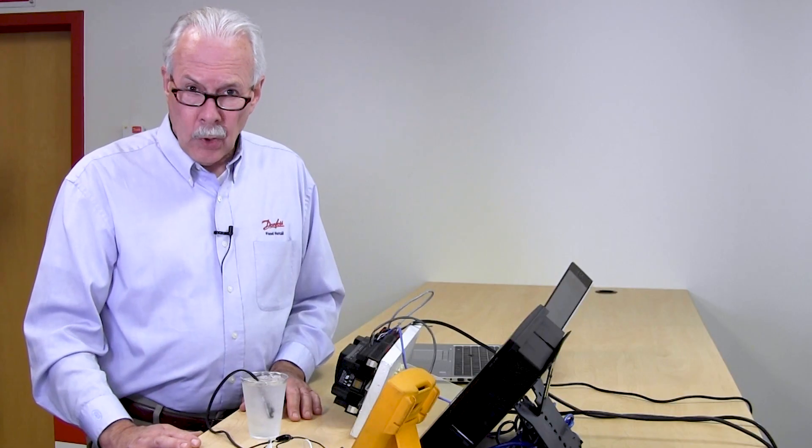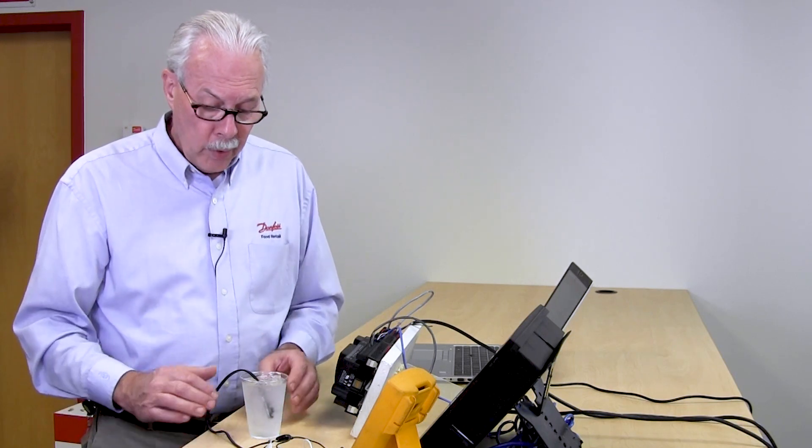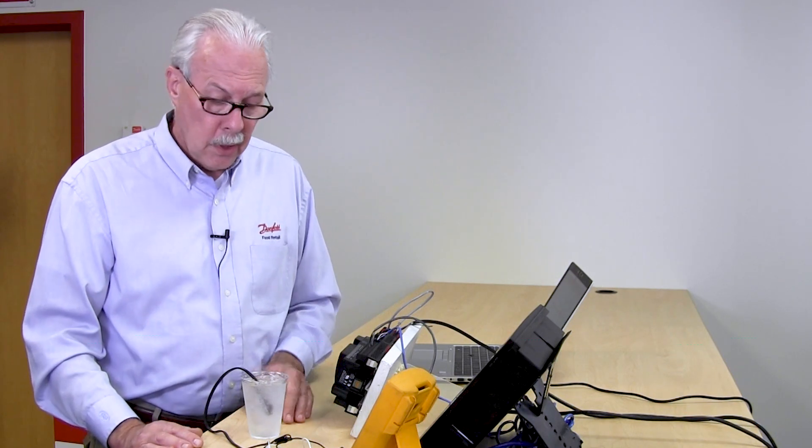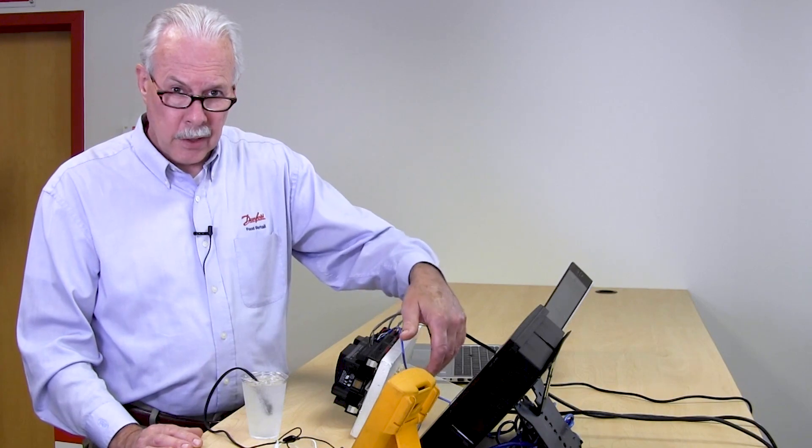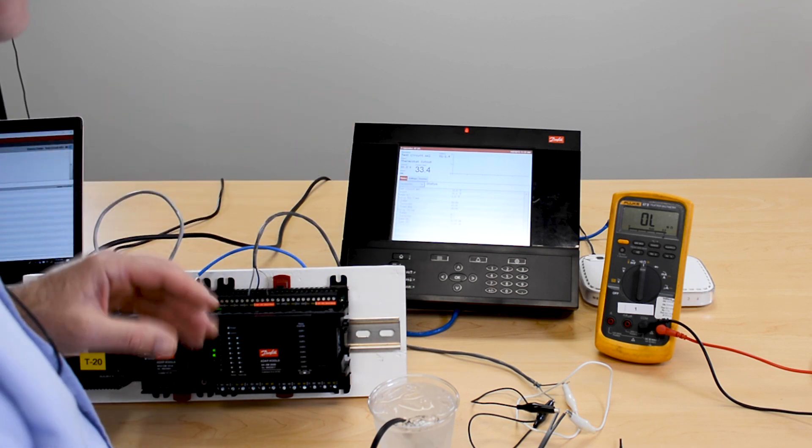In this video we're going to do some troubleshooting of a temp sensor. This is a basic layout where we have the temp sensor in some ice water that will get us very close to a medium temp application. We'll have our wire running from the case back to the control, then here we have our I.O. boards, and lastly we have our system manager.